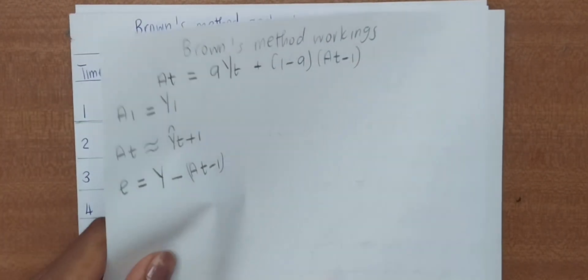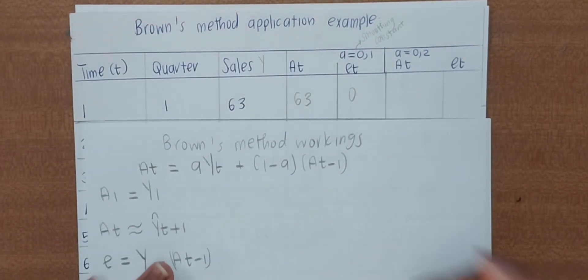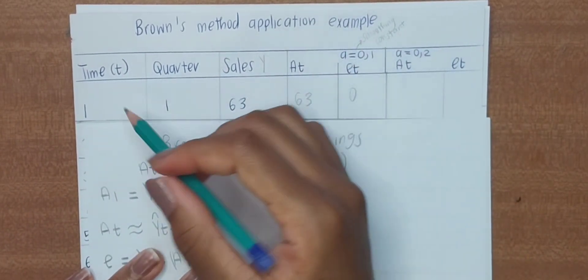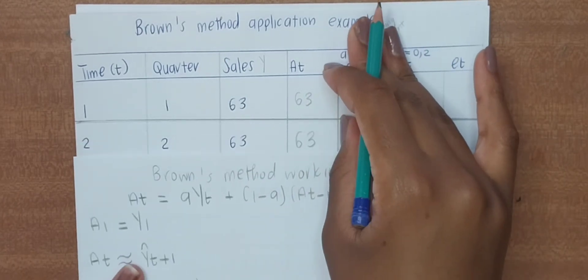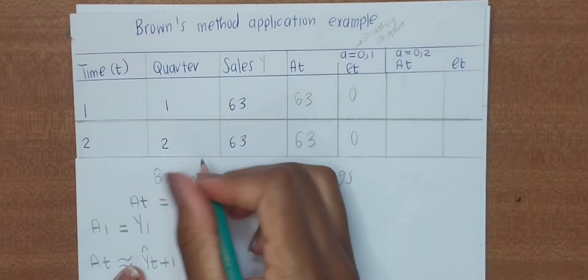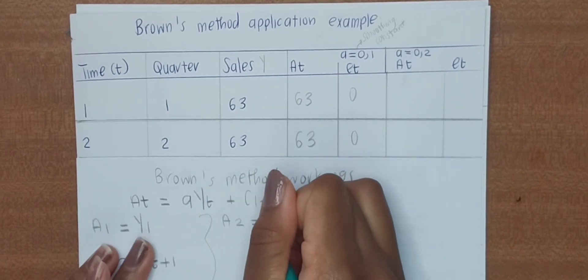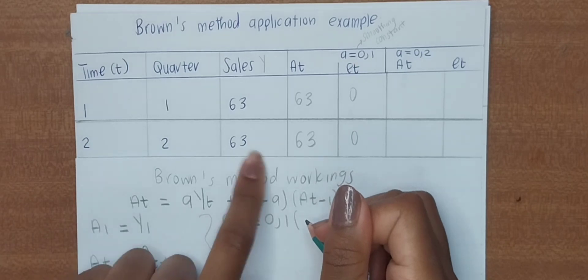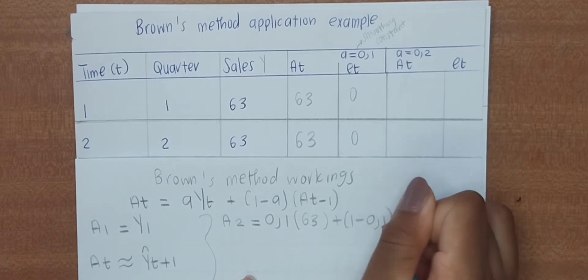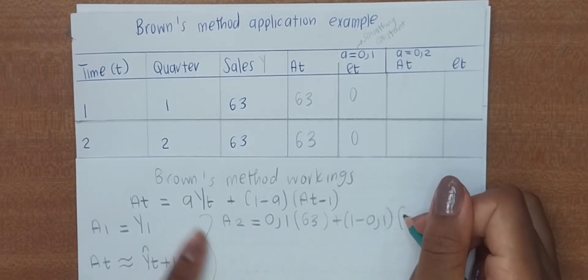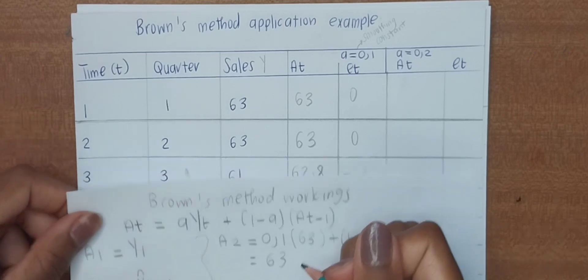I've already done the first three; I'm just going to show you how I did them. For t=1, A_1 is equal to Y_1, so it is 63. For the second one, A_2 is equal to α, which is 0.1, times the Y value that corresponds to that, which is 63, plus (1 minus 0.1), which is your α, times the previous A, which is A_1. You get 63.